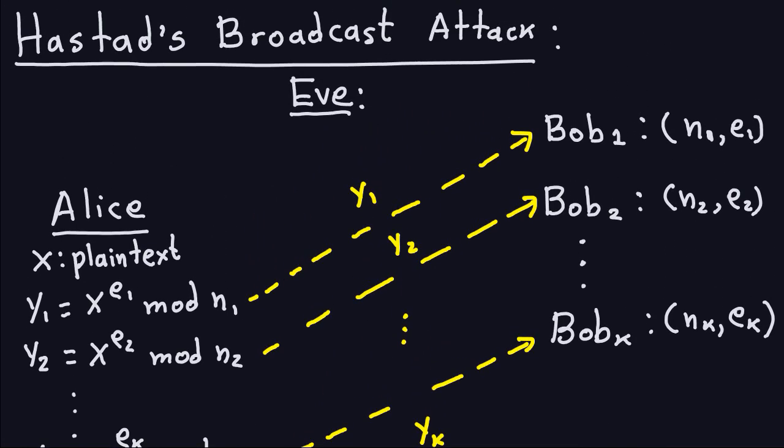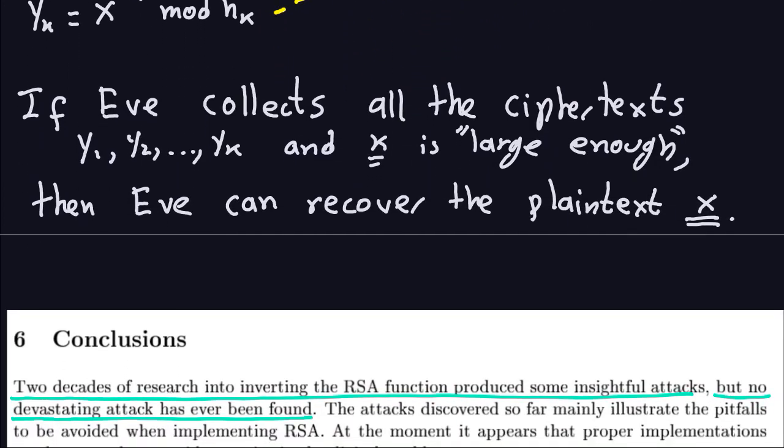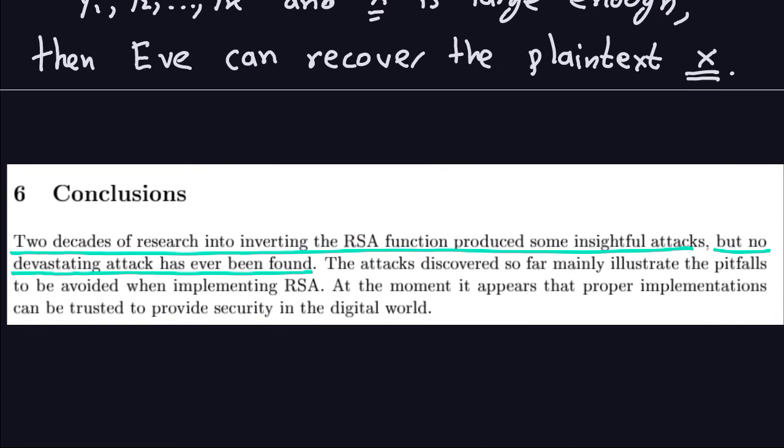Even though these old things can be done in the RSA, I want to emphasize here the conclusion of that same paper. It says two decades of research into inverting the RSA function, basically just trying to get the plaintext, produced some insightful attacks, but no devastating attack has ever been found, meaning that even though it is possible to recover, in some cases it's not feasible actually to do it. And also what happens is when the RSA is implemented, these weaknesses I just mentioned are taken into consideration to implement the RSA so it becomes secure. And the way they do it is through padding. So once padding is applied, then these weaknesses pretty much go away.